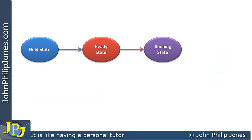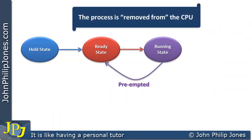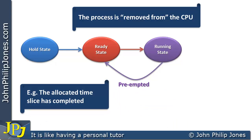Another outcome when a process is in the running state is that it can be preempted — removed from the CPU and moved back to the ready state. The reason for this is that the operating system might have a time slice allocation policy, where a process is put into the running state for a certain length of time. Once that time is up, the operating system moves it back to the ready state.